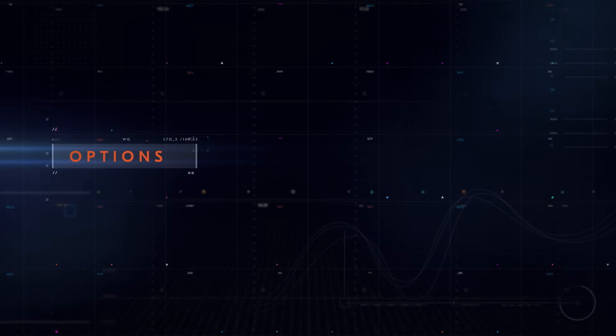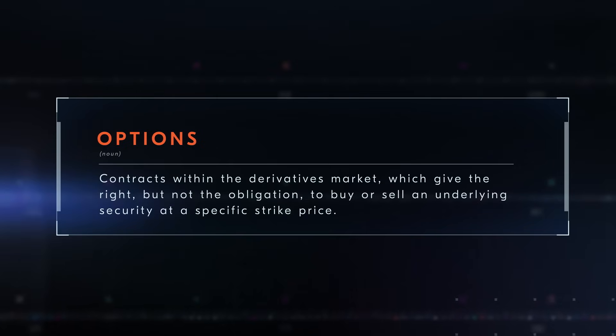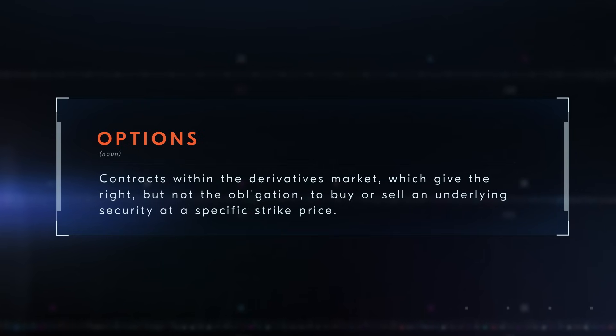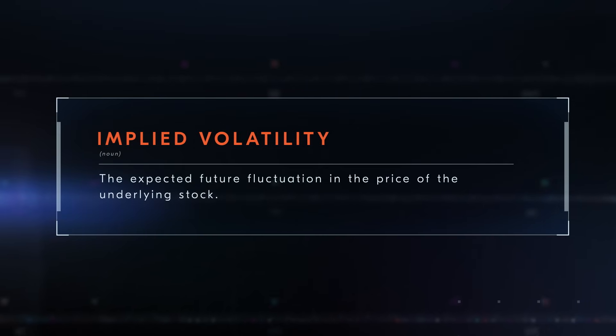The last data category that we will explore is Options. Options are contracts within the derivatives market, which give the right but not the obligation to buy or sell an underlying security at a specific strike price. While the world of options can be complex, in this example we will focus on extracting information from equity options by particularly focusing on a metric called Implied Volatility. Implied Volatility is the expected future fluctuation in the price of the underlying stock. Implied Volatility is computed using multiple variables like price of options, time to expiry of options, interest rates, strike prices, etc.